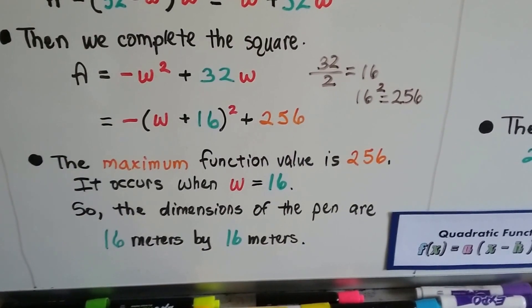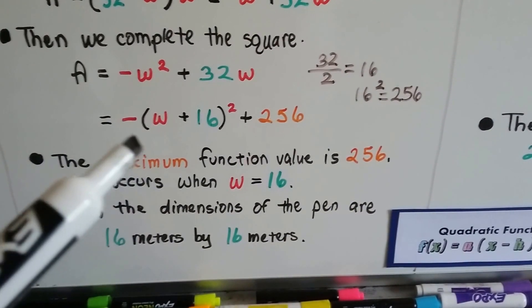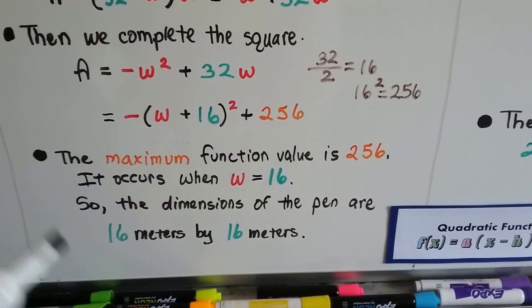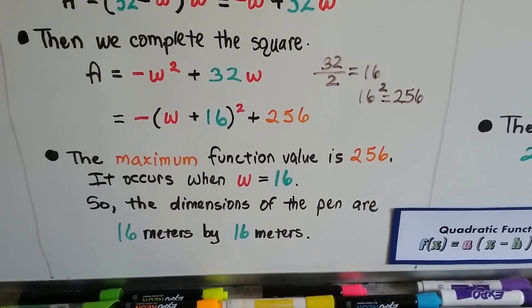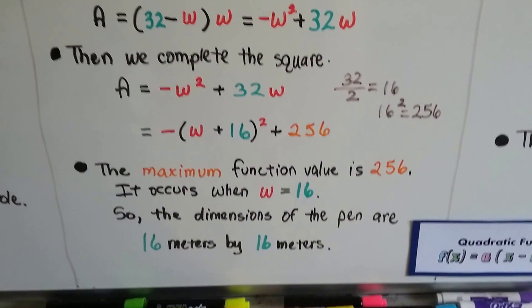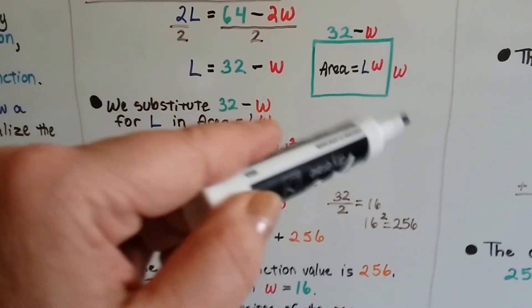It occurs when W = 16, and the dimensions of the pen are 16 meters by 16 meters. I know it said rectangle, but a square is basically a rectangle. It's got four sides, right?